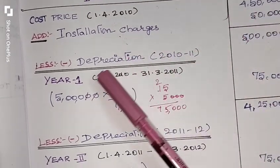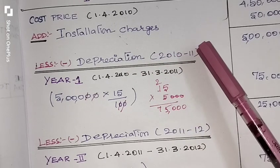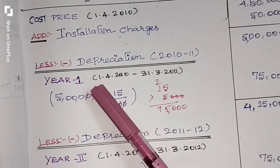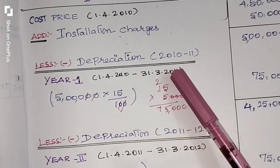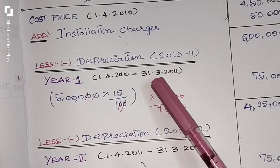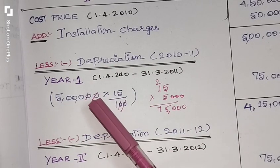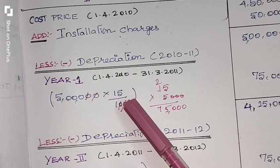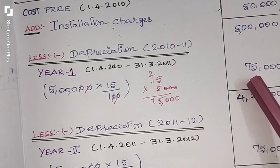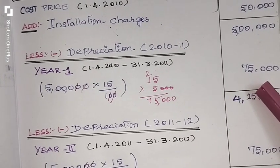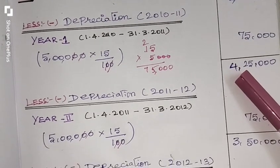Now we find the first year depreciation for 2010-11, that is 1st April 2010 to 31st March 2011. The original cost is Rs. 5,00,000 multiplied by 15% depreciation, which gives Rs. 75,000. We subtract Rs. 75,000 from Rs. 5,00,000 and we get Rs. 4,25,000.